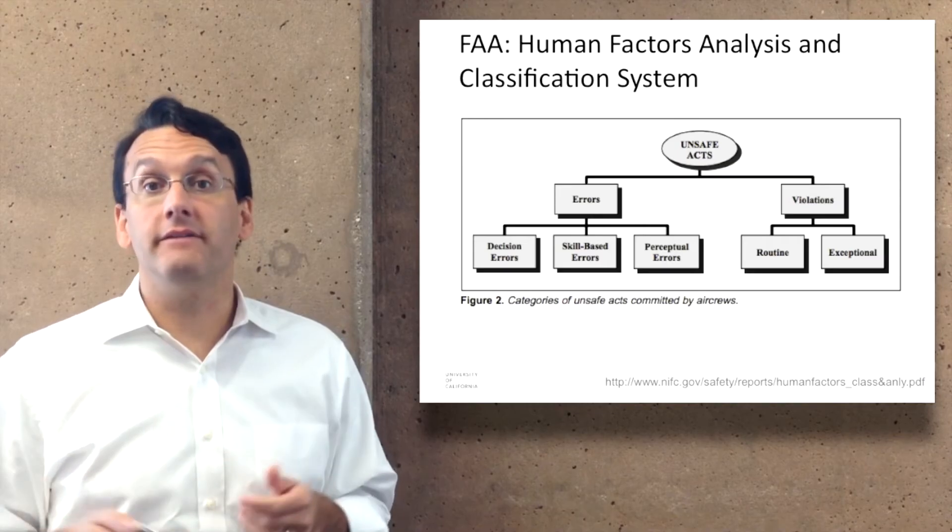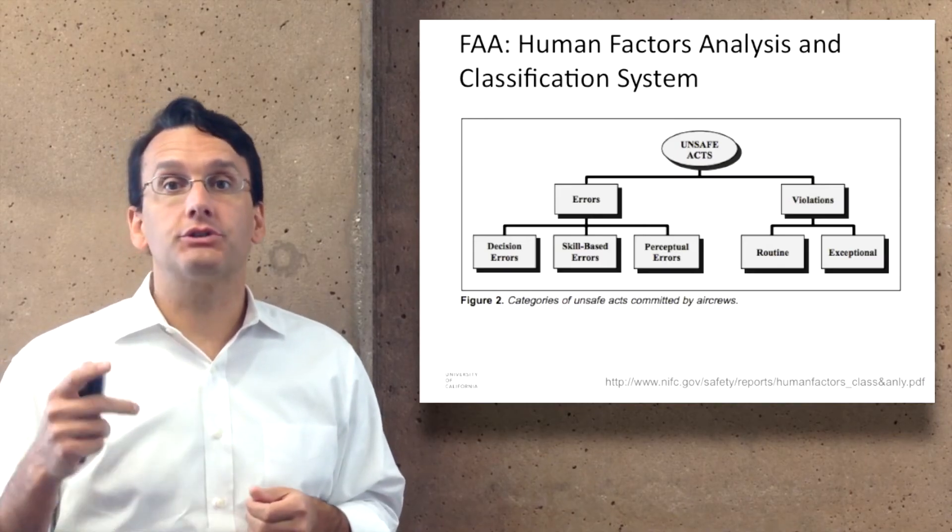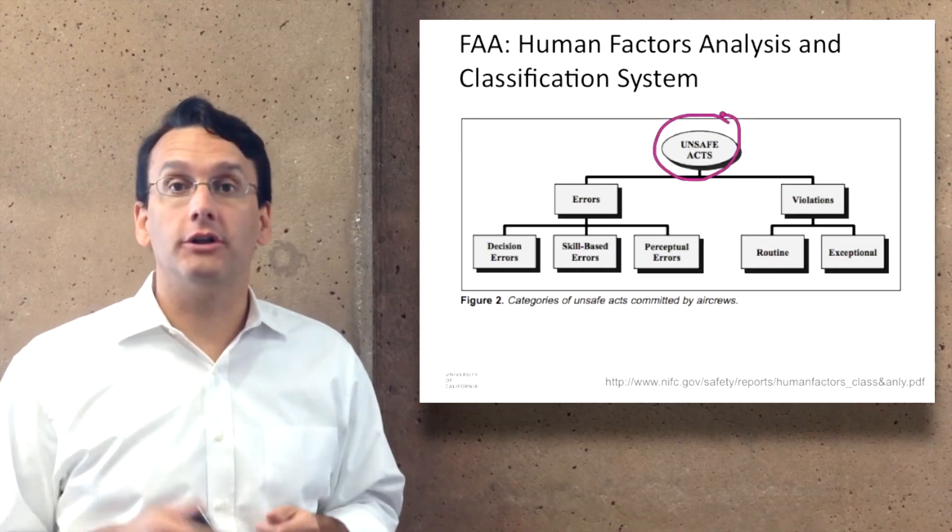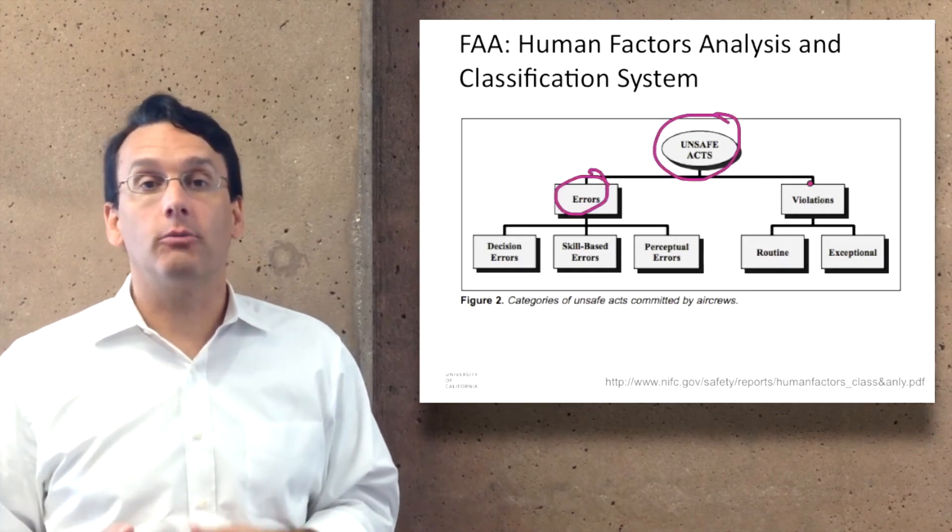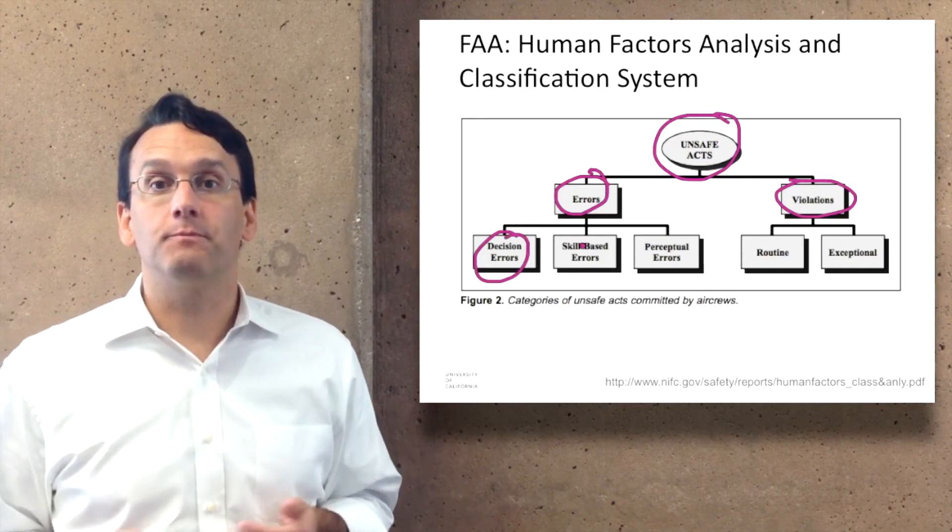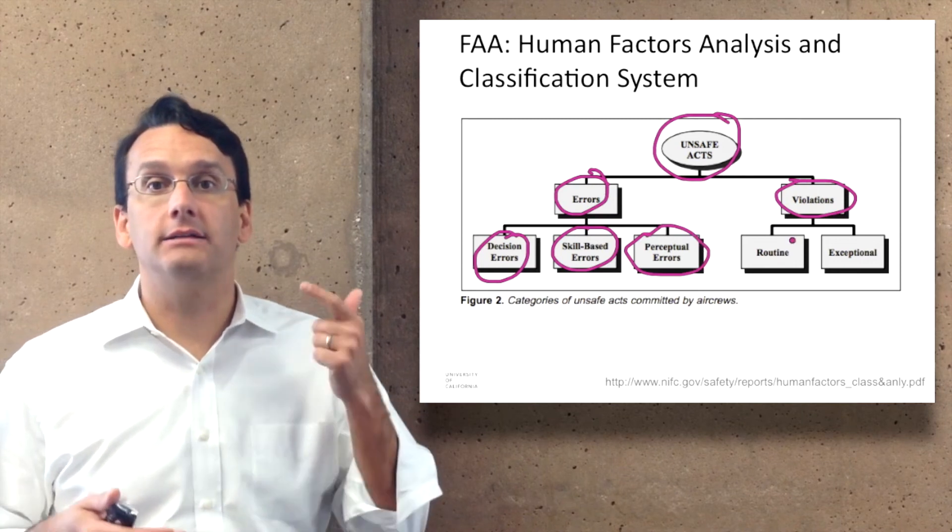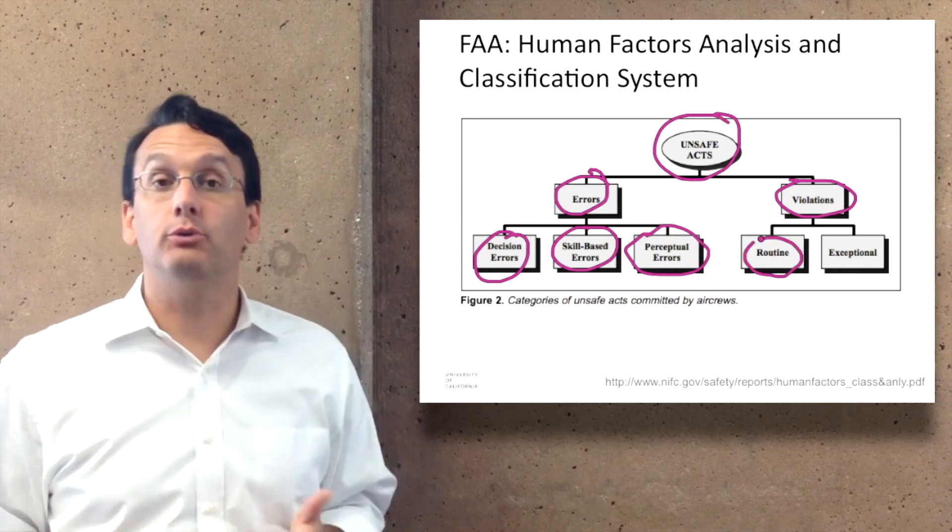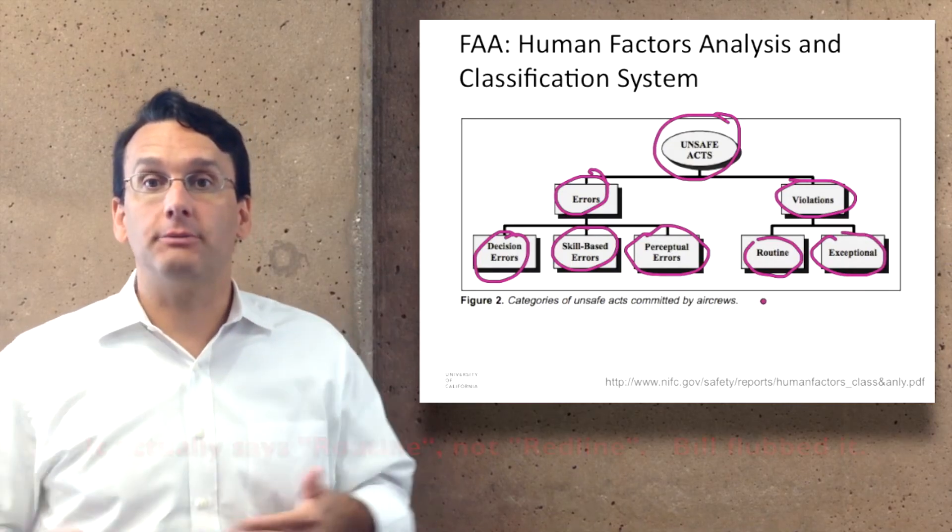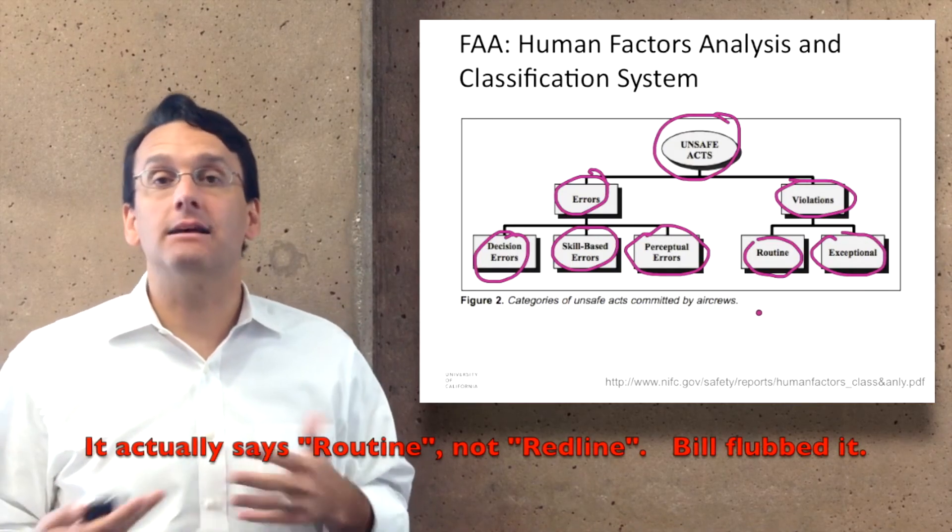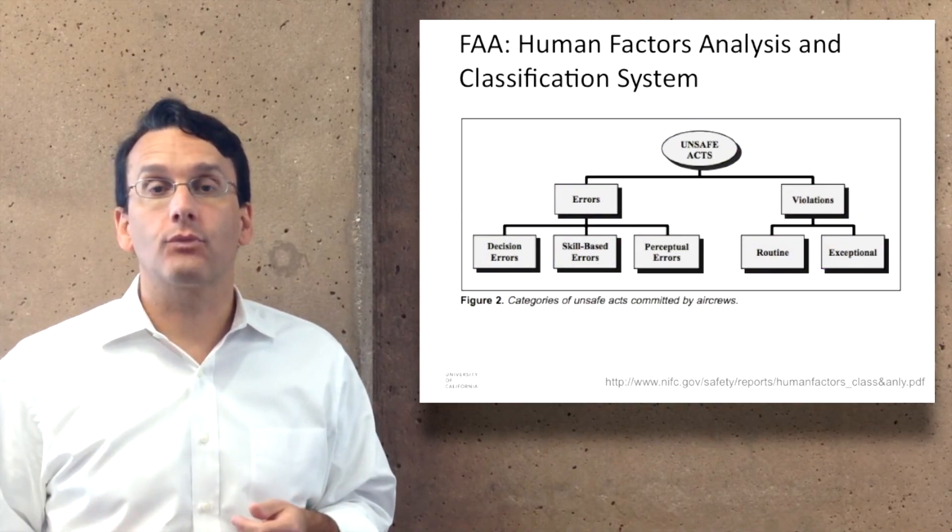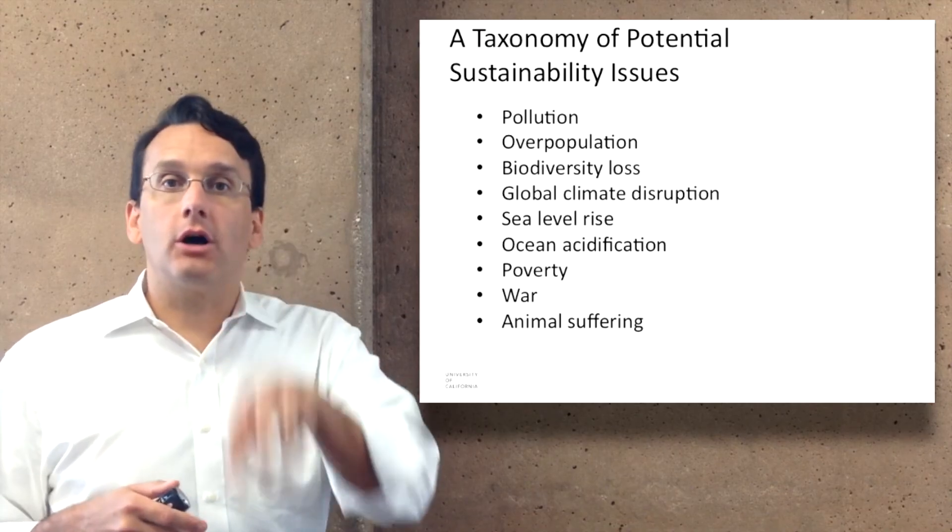Similarly, here's one from the Federal Aviation Administration which is describing a Human Factors Analysis and Classification System. It says that unsafe acts are broken down into errors and violations. Errors are broken down into decision errors, skill-based errors, and perceptual errors. This is how the FAA thinks about all of the different things that can go wrong in its domain.